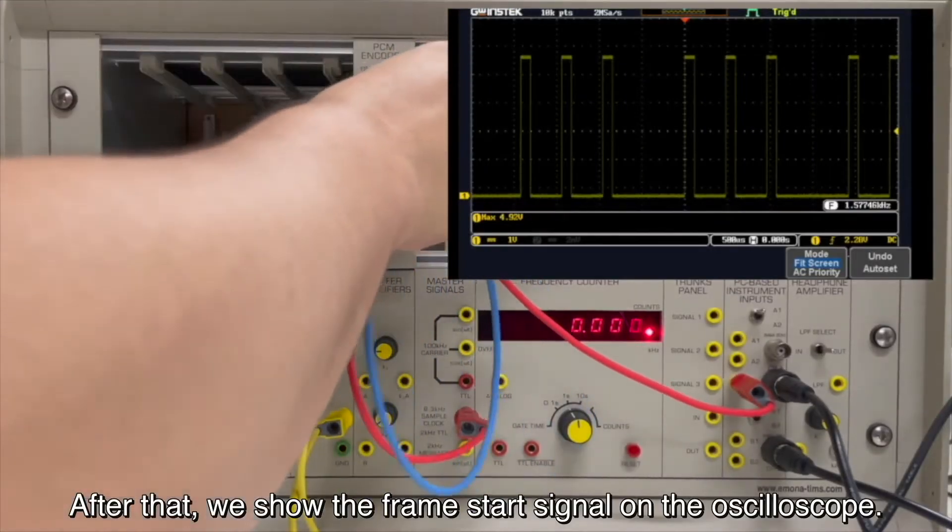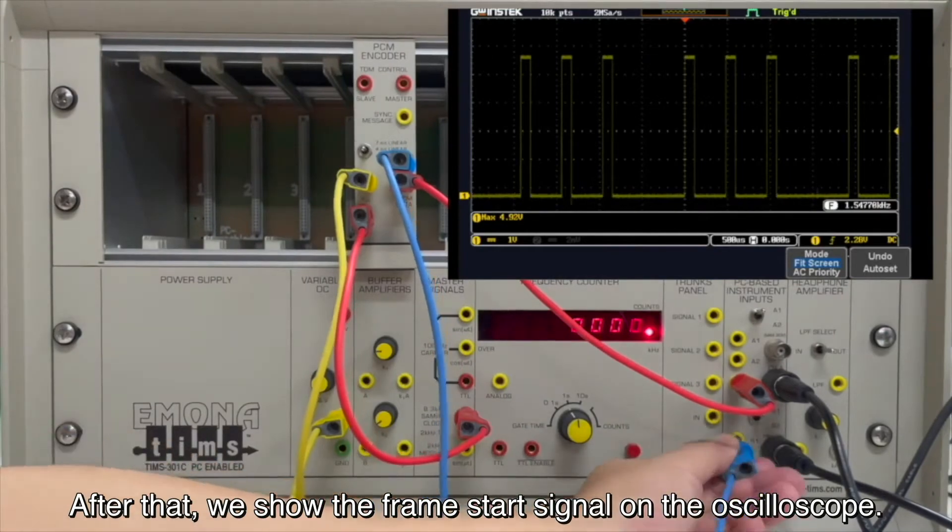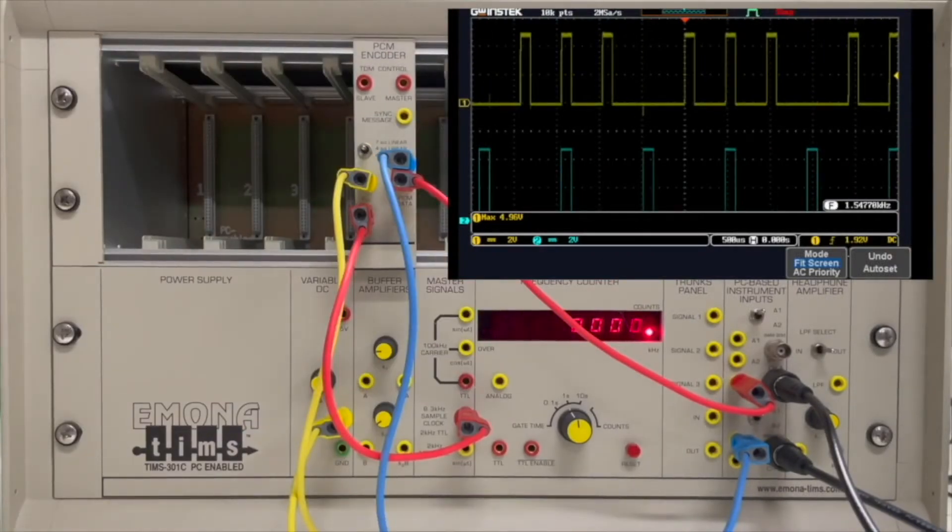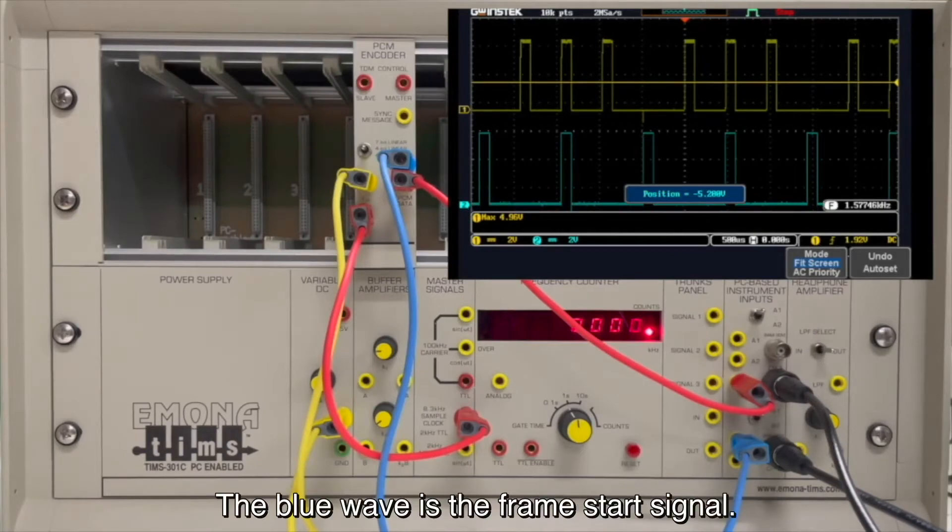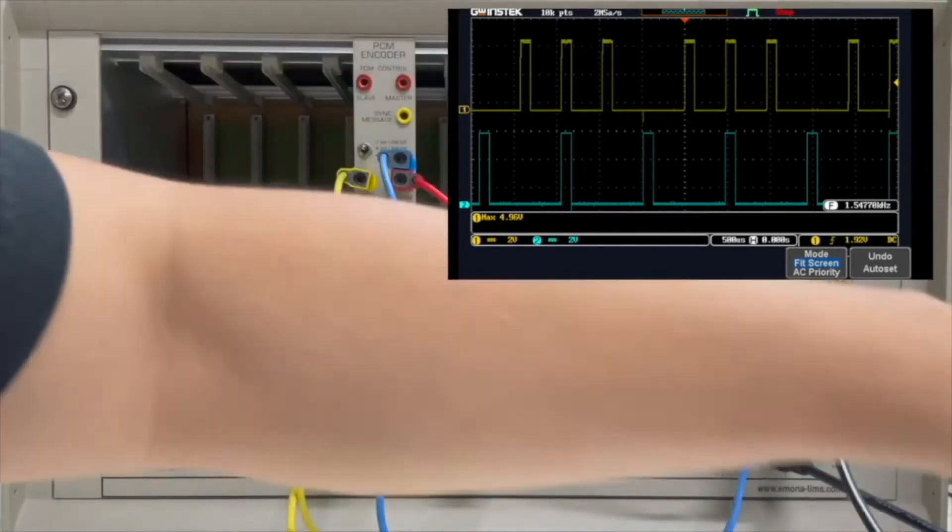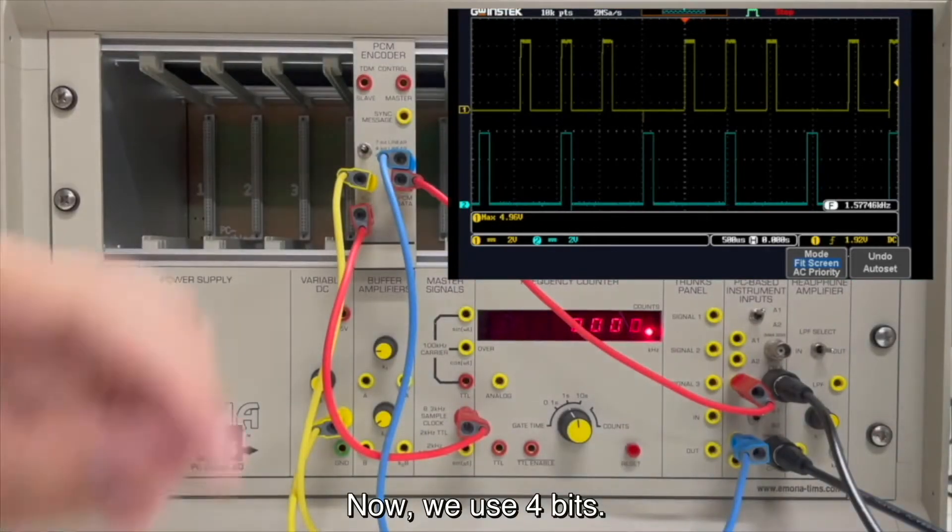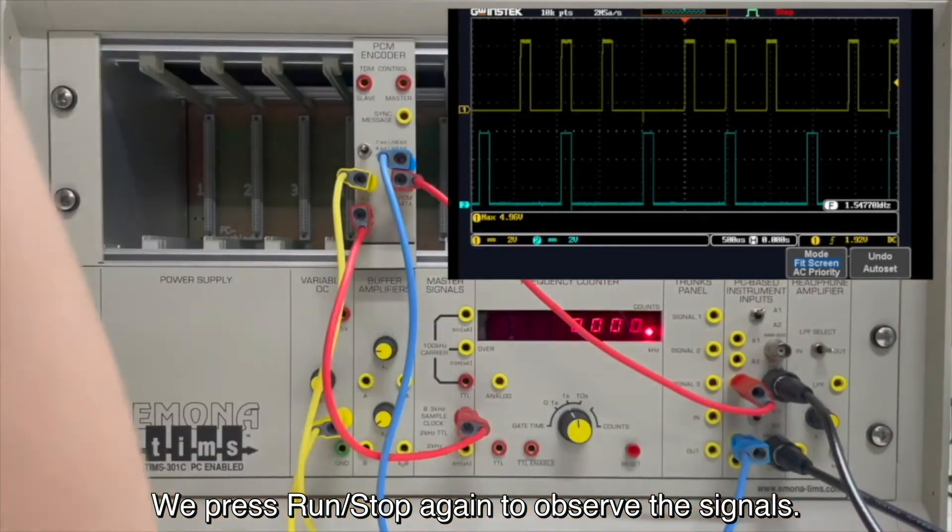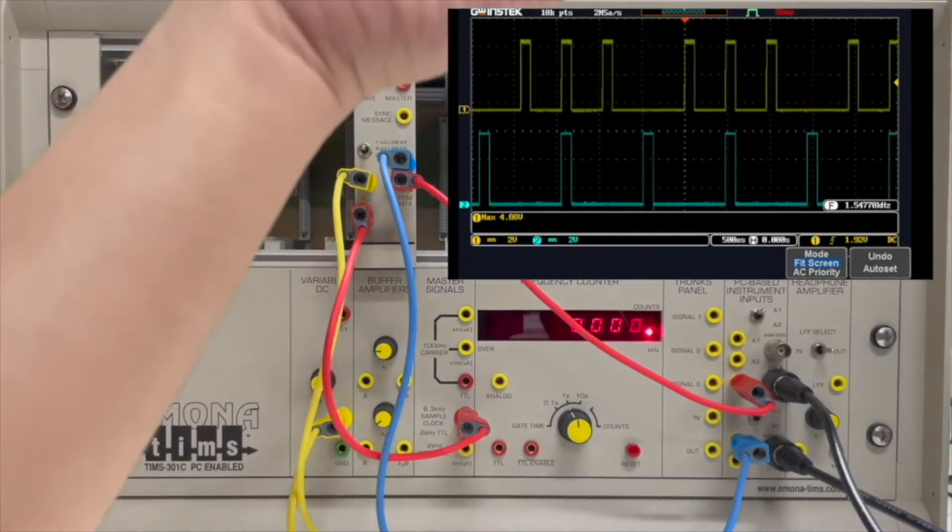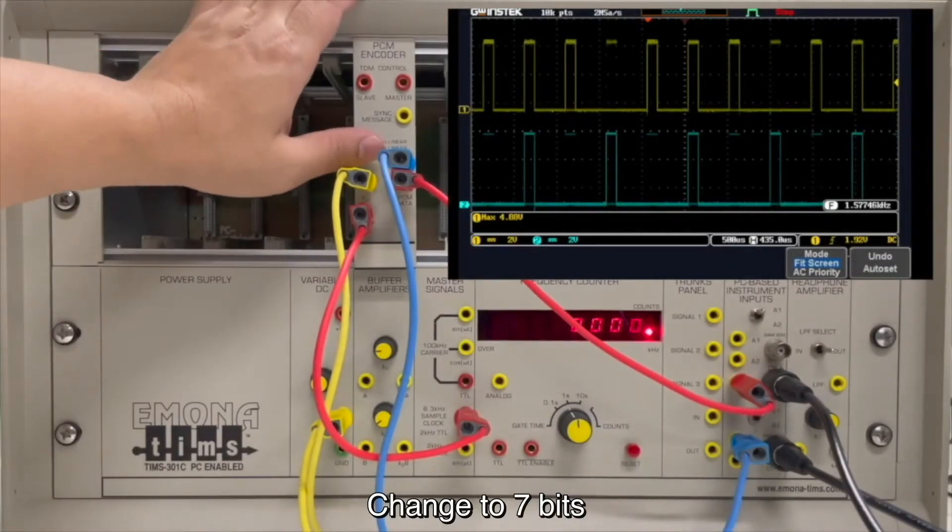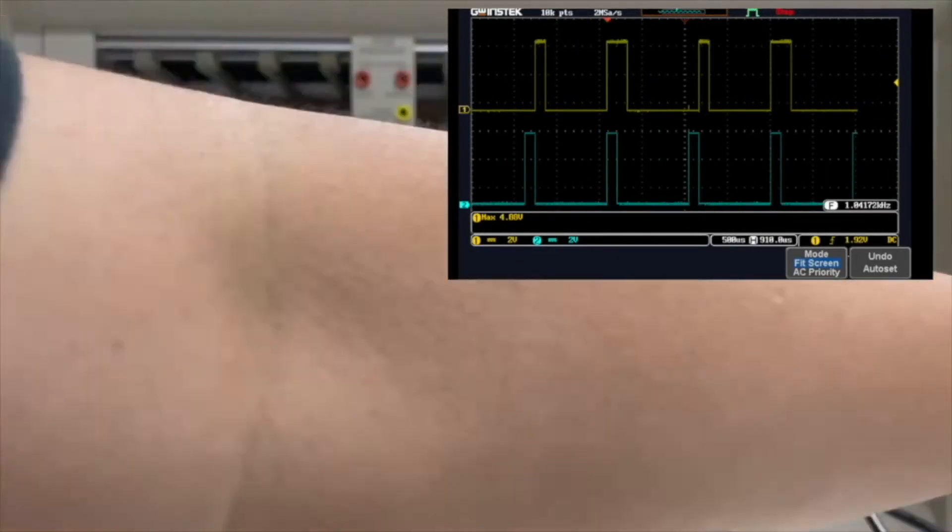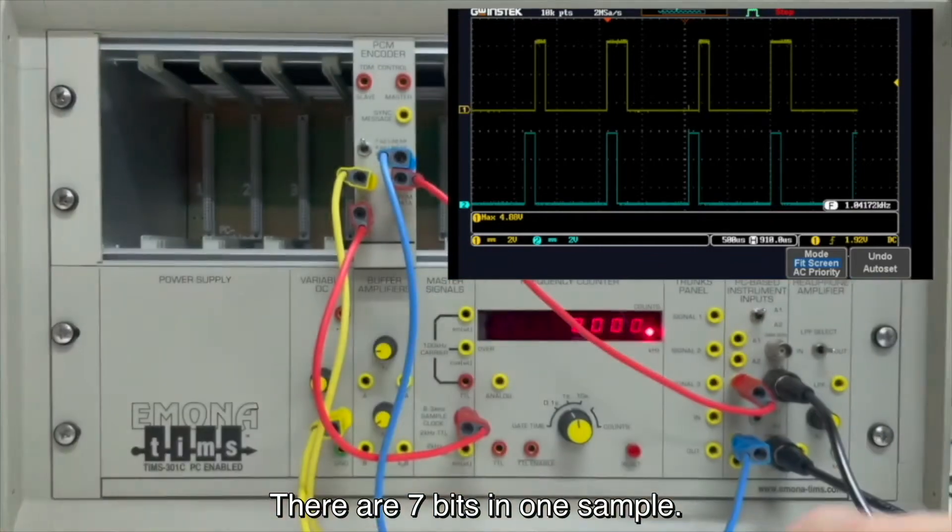After that, we show the frame start signal to the oscilloscope. Press run or stop button. Double wave is the frame start signal. Now, we use 4 bits. We press run or stop again to observe the signals. Move the signals. Change to 7 bits. There are 7 bits in one sample.